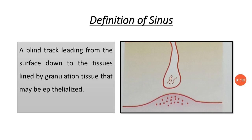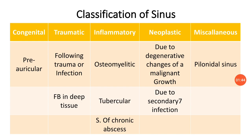So a blind track leading from the surface down to the tissues, which is lined by granulation tissue. We have to take care of the granulation tissue, which later on becomes epithelialized. In Unani medicine, a sinus remains for more than 40 days.